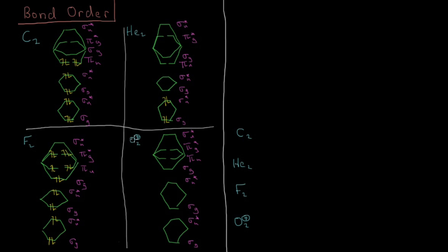We can also look at ions as well, where we add or remove an electron. For O2, oxygen has a nuclear charge of 8, so 2 of them have 16 electrons. A plus charge means we've removed one electron, so we have 15 total electrons in O2+ to fill up these orbitals.